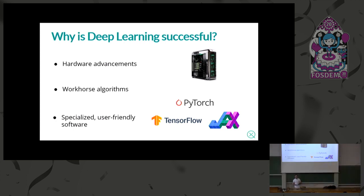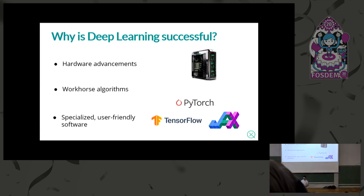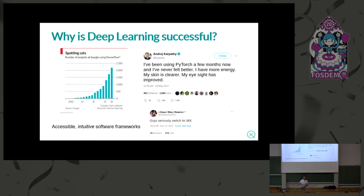We sat down and asked ourselves why deep learning was so successful over the last decade or so, and it basically came down to three main points. First, hardware advancements — GPUs became immensely important in machine learning, enabling thousands of small parallelized computations, causing a seismic shift in what we could do. This is in addition to tensor processing units, or TPUs, which have also revolutionized machine learning.